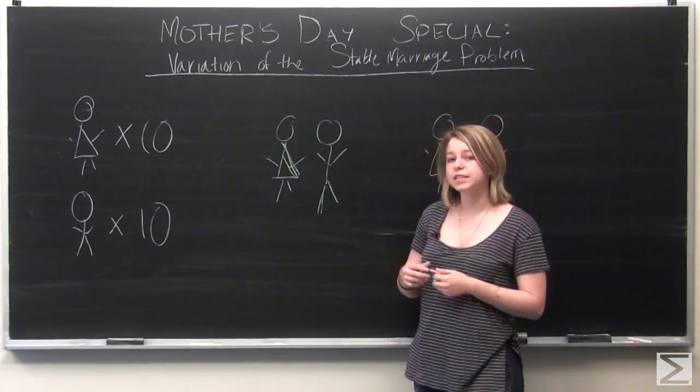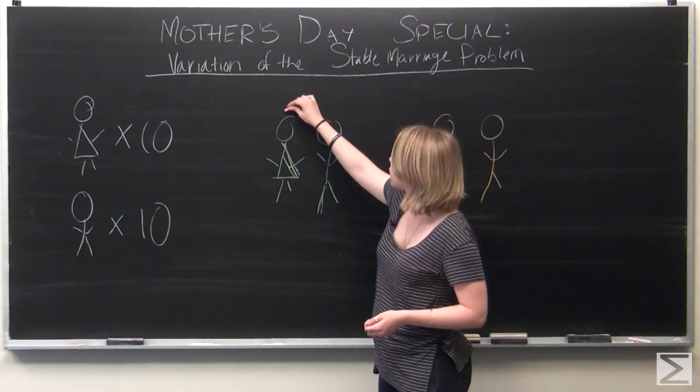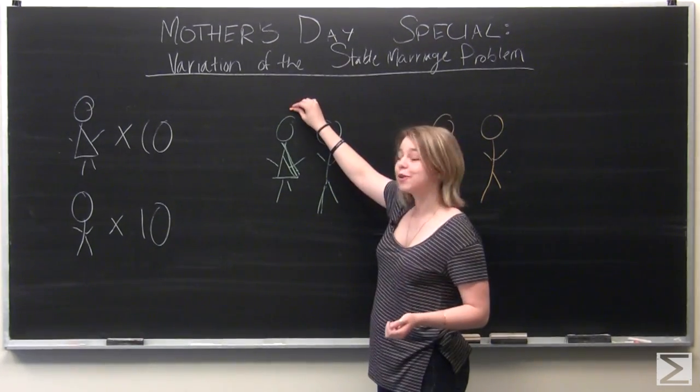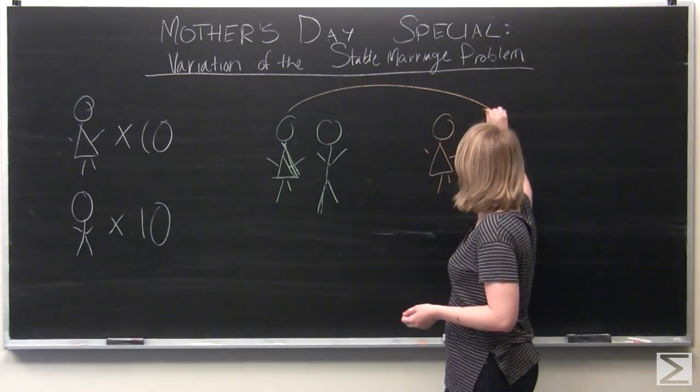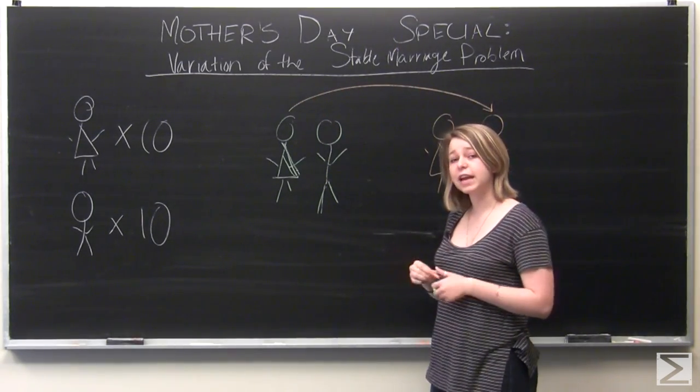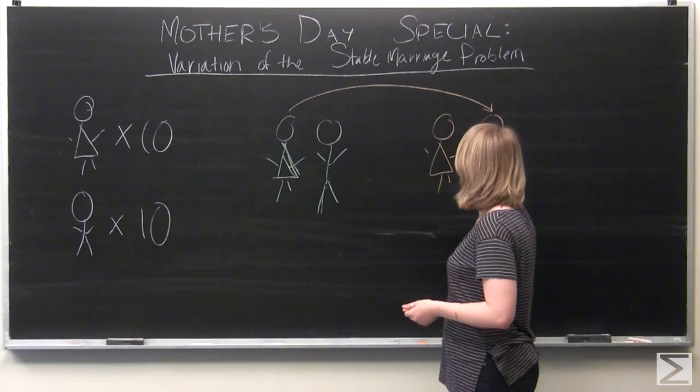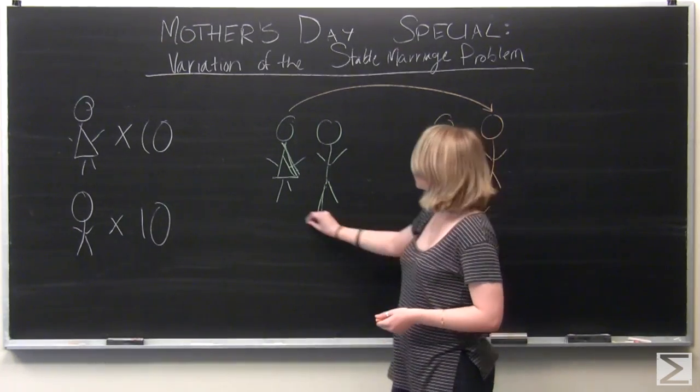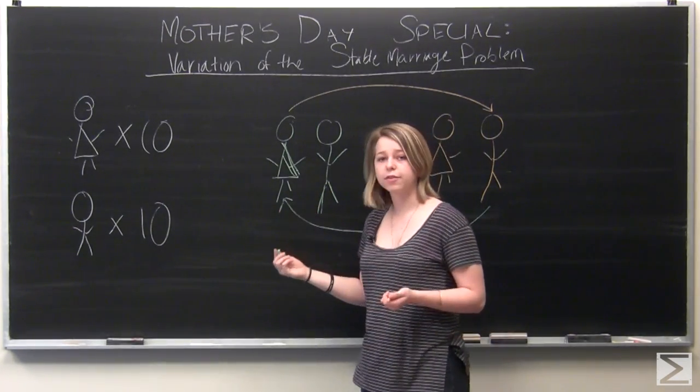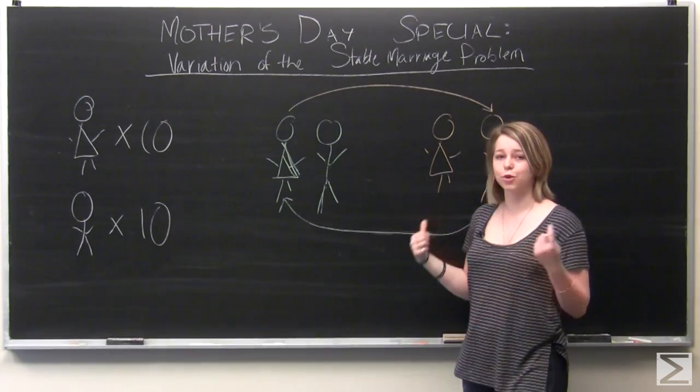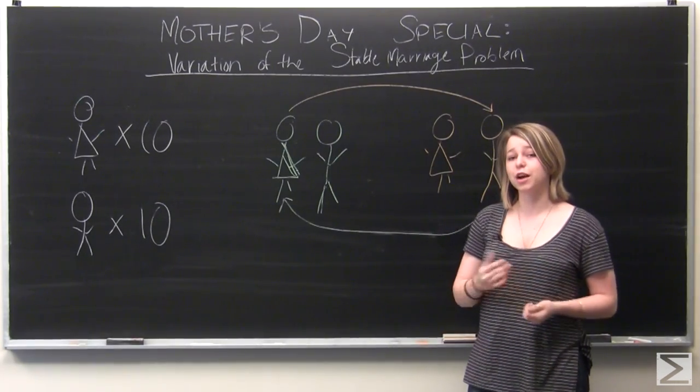This marriage would not be stable if, for example, the green wife preferred the orange husband at the same time as the orange husband preferring the green wife. If this happened, then these two would run off together and the marriage would not be stable any longer.